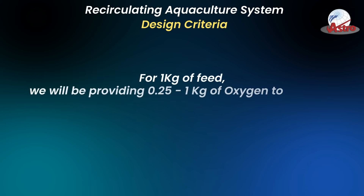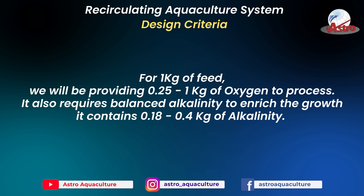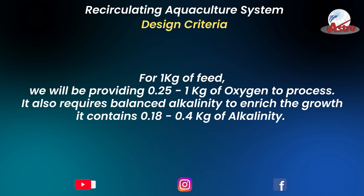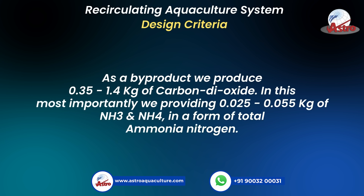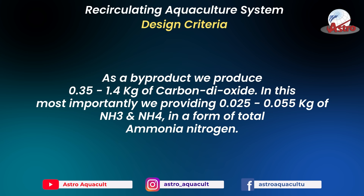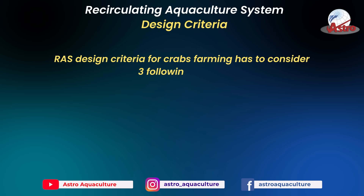For 1 kg of feed, we provide 0.25 to 1 kg of oxygen to process. It also requires balanced alkalinity of 0.18 to 0.4 kg to enrich growth. As a by-product, we produce 0.35 to 1.4 kg of carbon dioxide. Most importantly, we produce 0.025 to 0.055 kg of NH3 and NH4 in the form of total ammonia nitrogen.